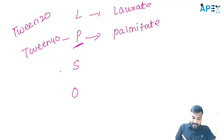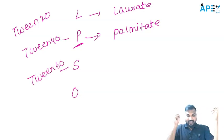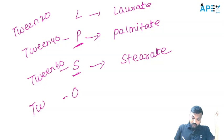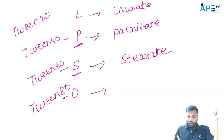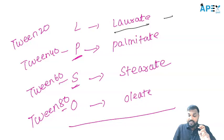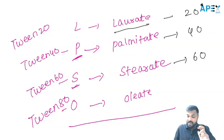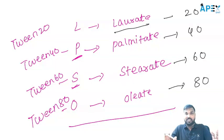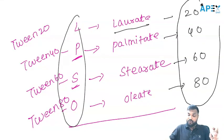Suppose in the exam they ask Tween 60 — that is polyoxyethylene sorbiton stearate. And O means Tween 80 — polyoxyethylene sorbiton oleate. So you can easily remember LIPSO: L=laurate (20), I/P=palmitate (40), S=stearate (60), O=oleate (80). If it is Tween 20, it is polyoxyethylene sorbiton laurate. If it is Span 20, it is sorbiton ester only — spans have no polyoxyethylene.